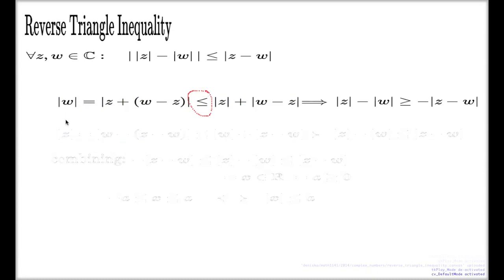Now, I'll do a similar trick, but now for z rather than w. Here it is. I start with z. I do my silly trick. See, I just break it like this. And then another instance of triangle inequality. Another instance of triangle inequality. And we come up with something like this.